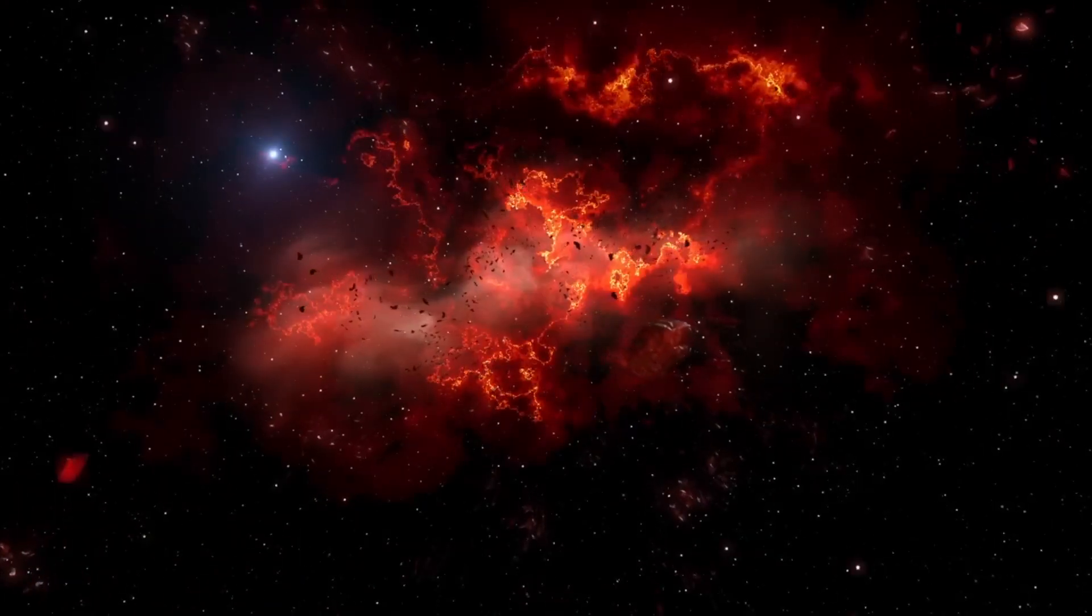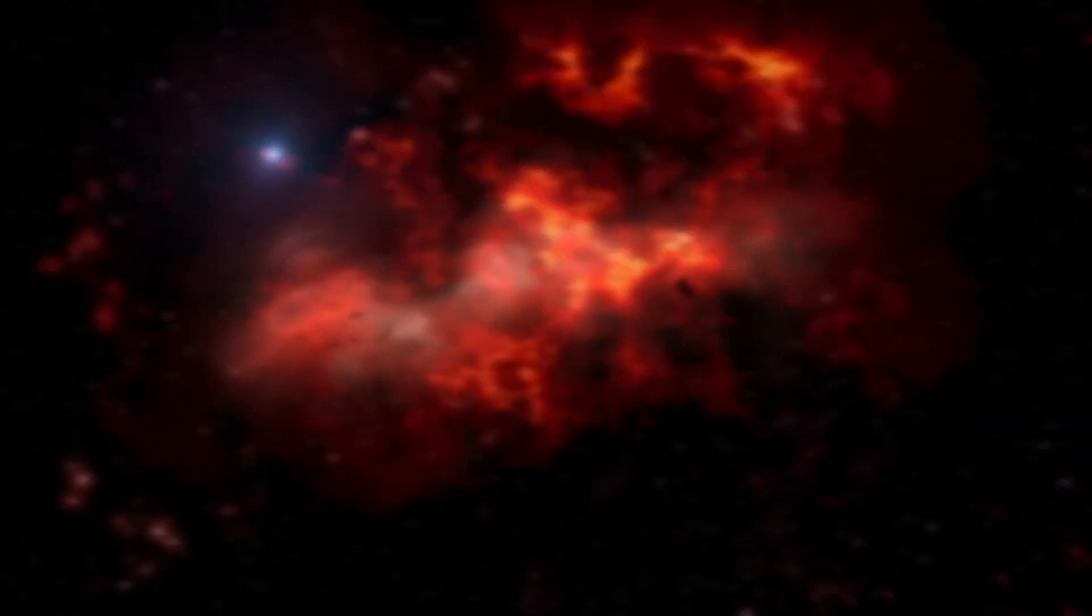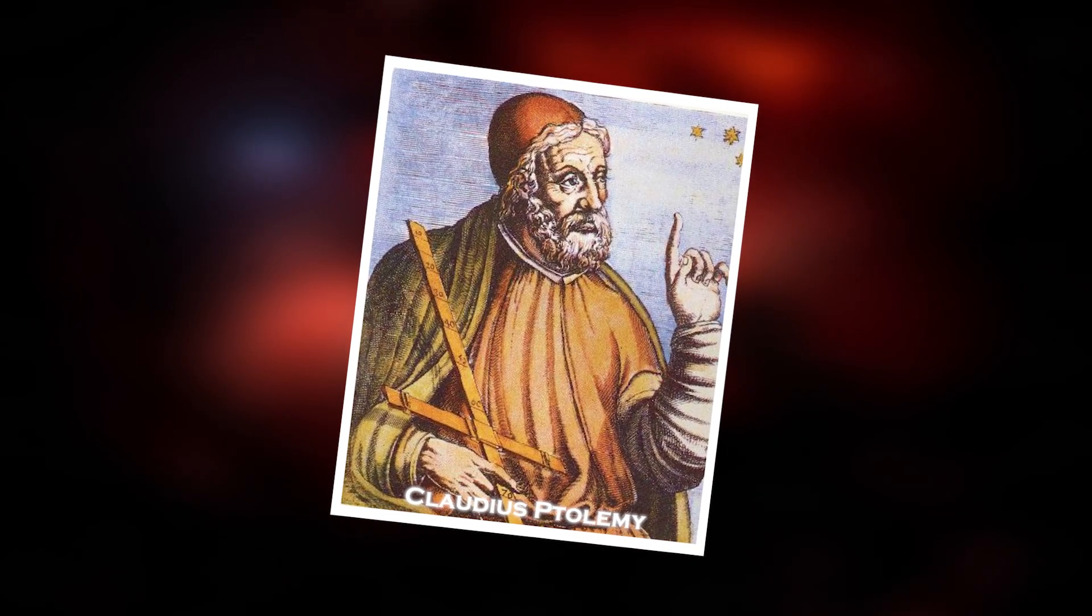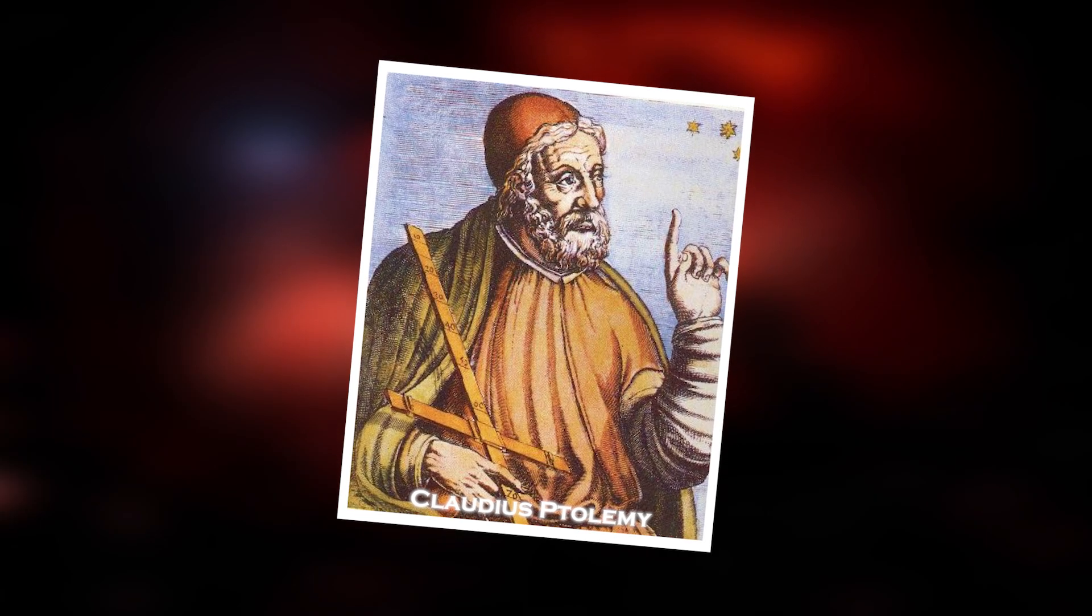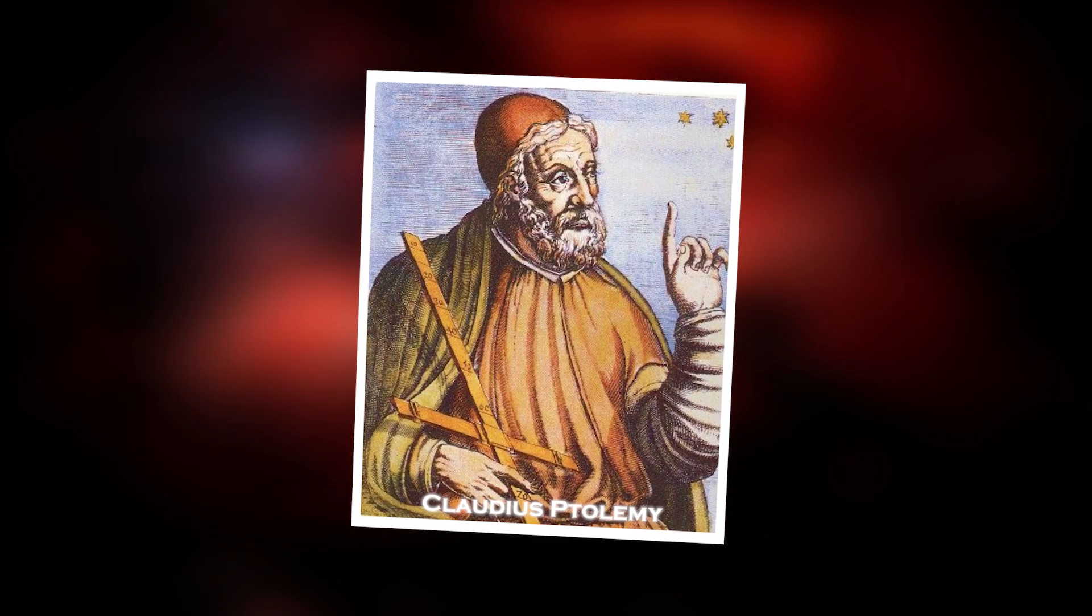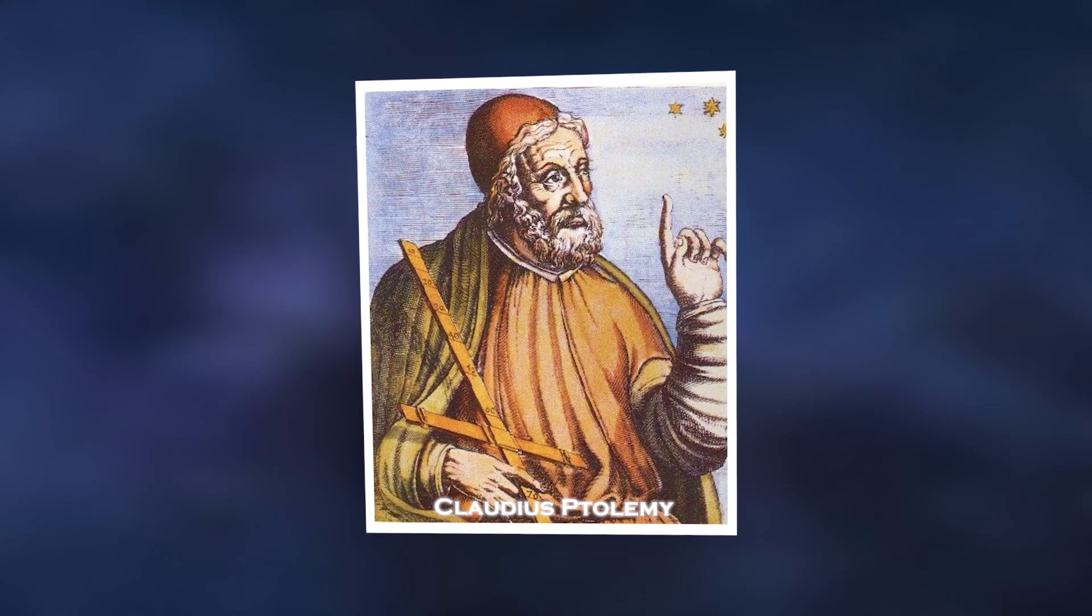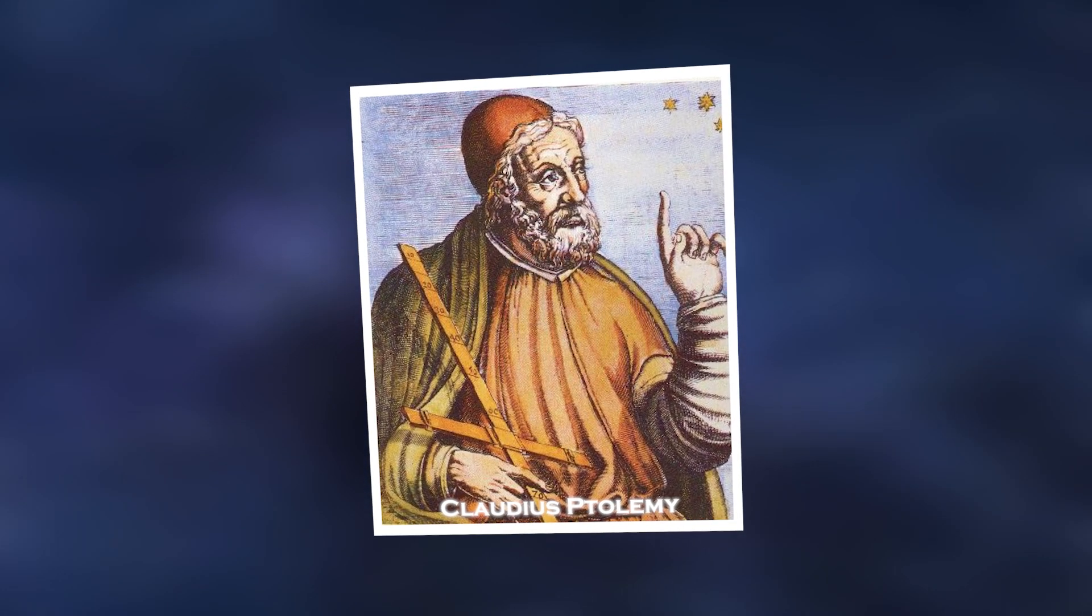Eventually, this observation passed to the keen eyes of the Greco-Roman astronomer Ptolemy in the second century AD, who in his meticulous records described Betelgeuse as having an orange or reddish appearance, a feature that to this day continues to catch our attention.